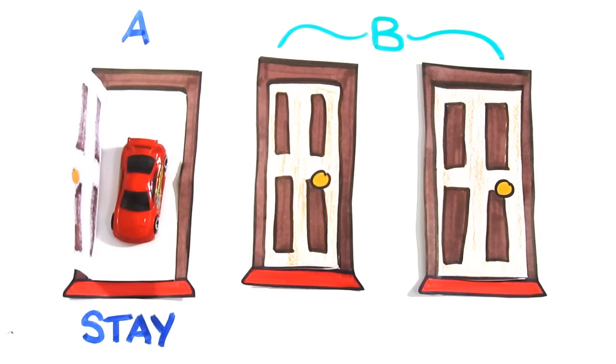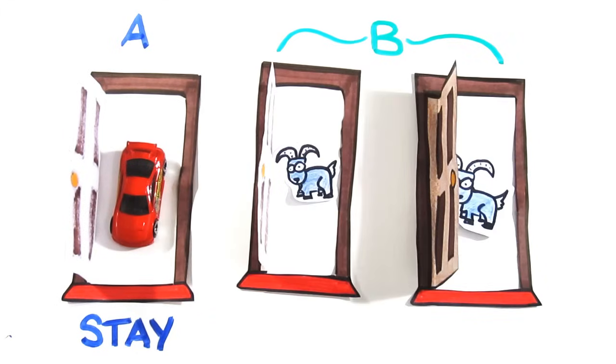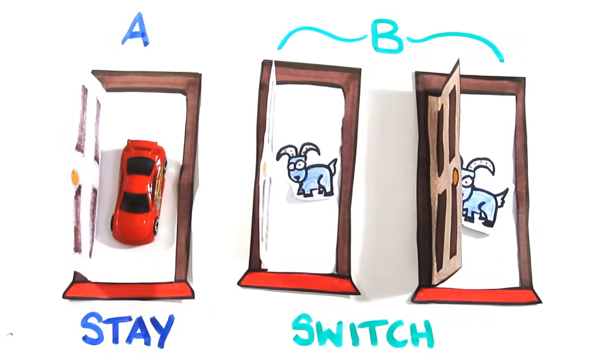Or B. You picked the wrong door, and I show you the other incorrect answer, in which case switching will make you win. Scenario A will always happen when you choose the winning door, and B will always happen when you pick a losing door.